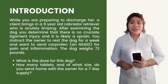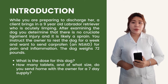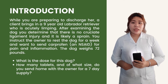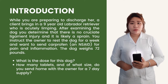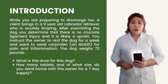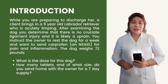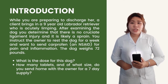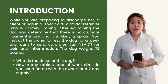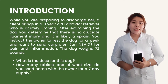A client brings in a 9-year-old Labrador retriever who is severely limping. After evaluating the dog, you conclude that there is no cruciate ligament injury and that the injury is most likely a sprain. You ask the owner to rest the dog for a week and send carprofen, a non-steroidal anti-inflammatory drug for pain and inflammation. The canine weighs 72 pounds. What is the dose for this dog? How many tablets and of what size do you send home with the owner for a 7-day supply? These are just some of the situations veterinarians encounter every day.